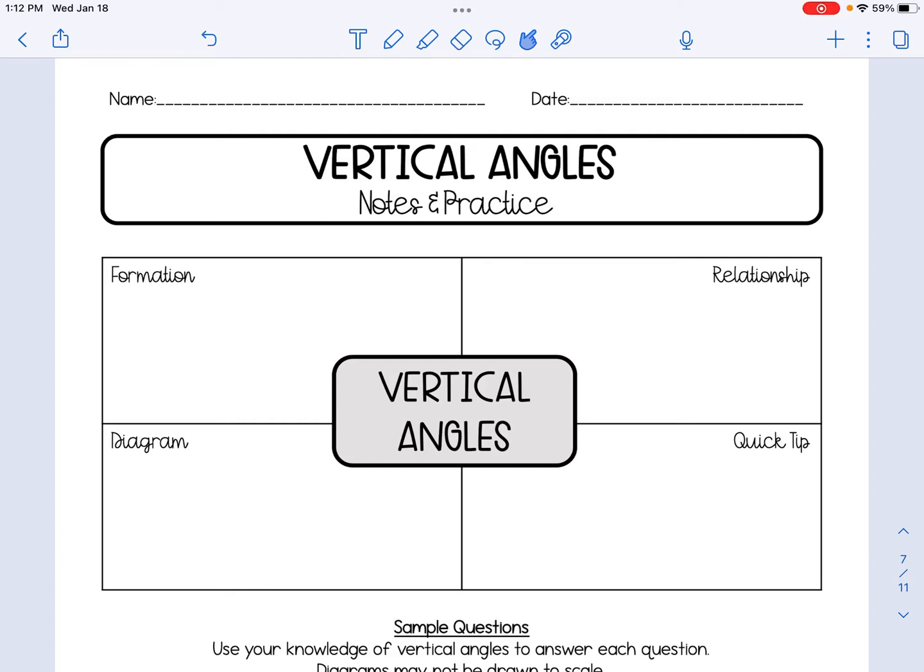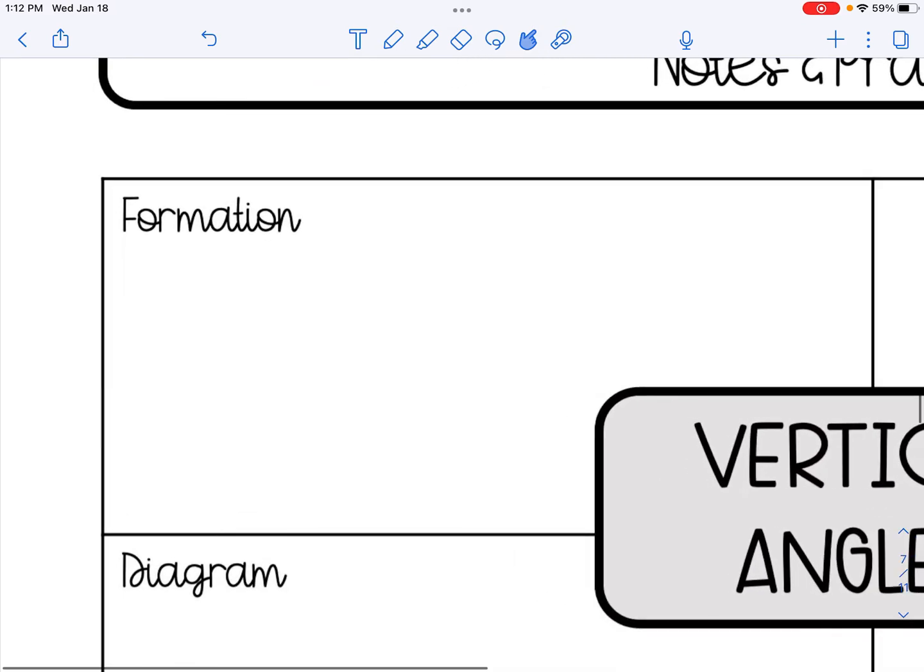In this video, we will be discussing vertical angles. First, let's talk about how vertical angles are formed. Vertical angles are formed by intersecting lines.